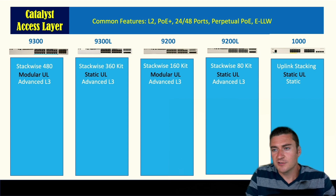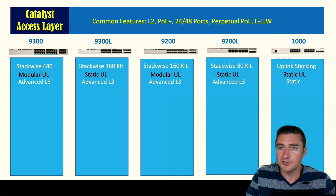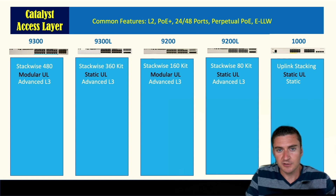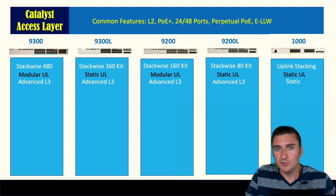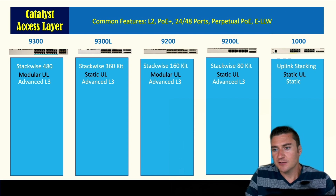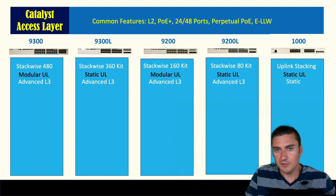Let's talk about routing capabilities. These are switches, but they can also route. The 9300 through the 9200 all support advanced layer 3 — protocols like OSPF, EIGRP, and RIP. The Catalyst 1000 can do static routes only; there are no advanced routing capabilities available for it.